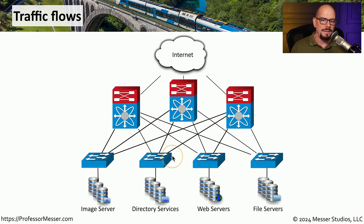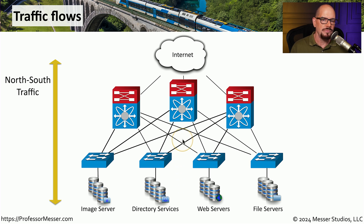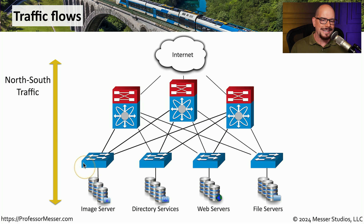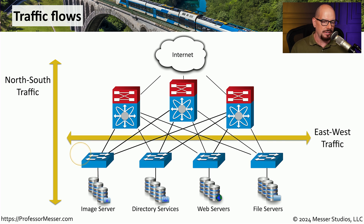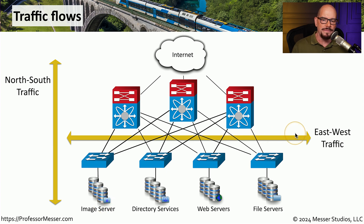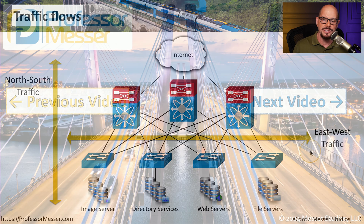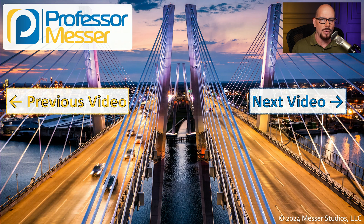Here's a better view of these traffic types. If data is coming into the network from the internet or we're sending information out to the internet, we refer to that as north-south traffic. Any traffic that is inside the local data center — for example, a file server sending information to an image server — is staying within the data center and would be considered east-west traffic.